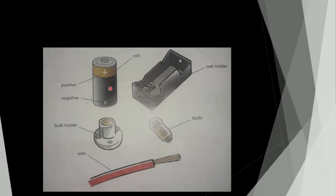Once more. What is this one? It is called a battery or cell. A cell has two terminals — this one is called a positive terminal, see the plus sign here — positive. This one is negative. And this one is called a bulb holder — this bulb is kept here. Then this one is wire. And this is called a cell holder — this cell is kept here in the cell holder.